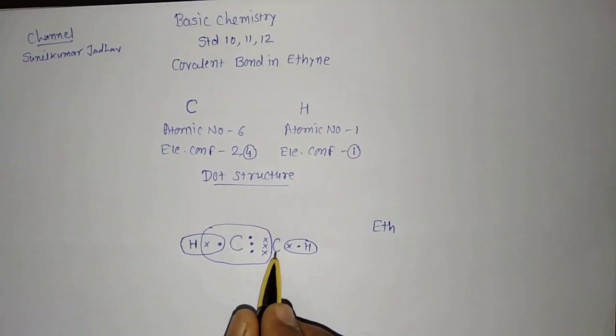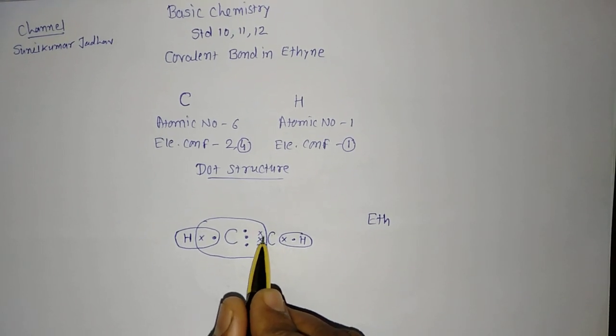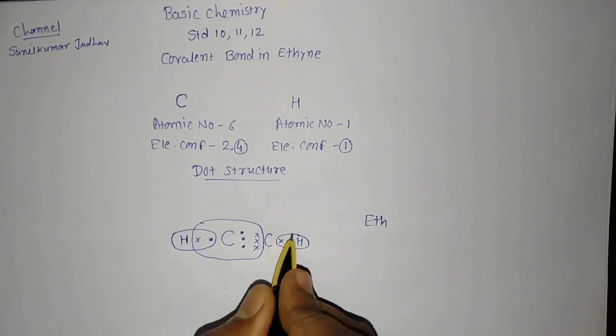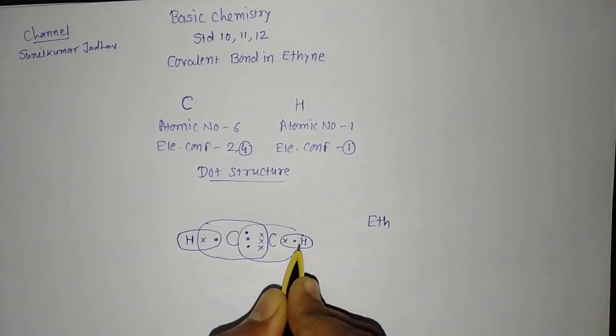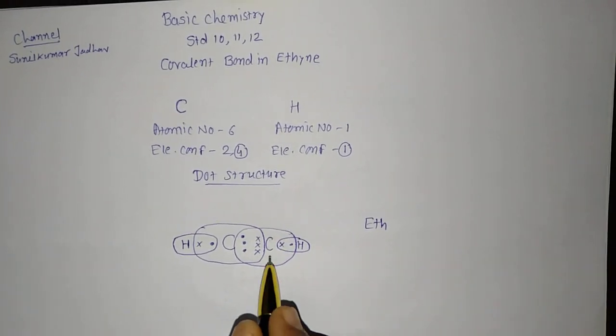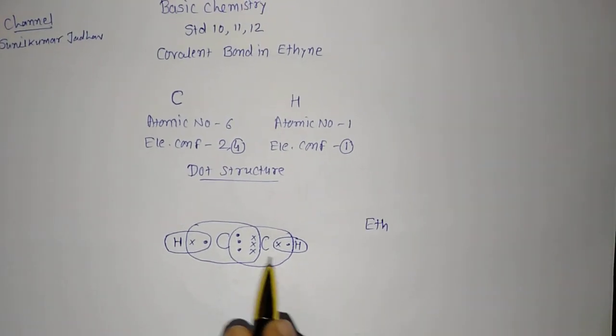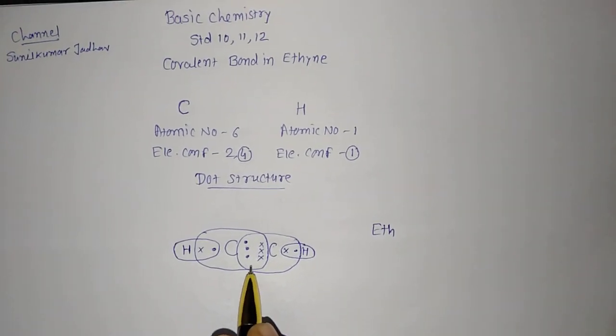For this carbon, if you are talking about this carbon, it is 1, 2, 3, 4, 5, 3 more required. So, I will do the circle here. It has been done. It has done sharing of 3 electron pairs.